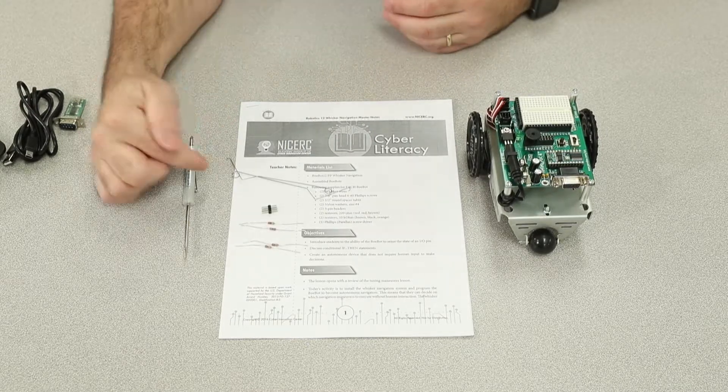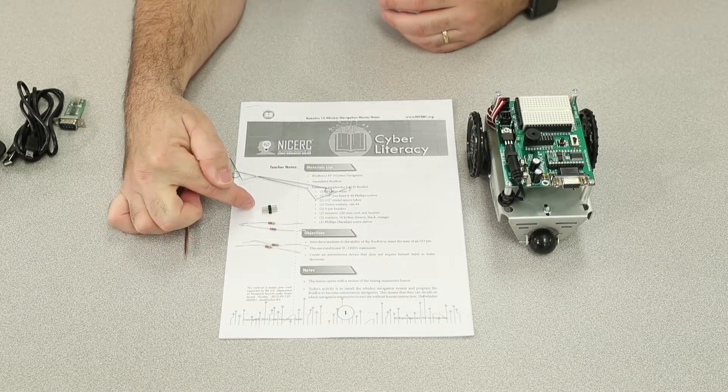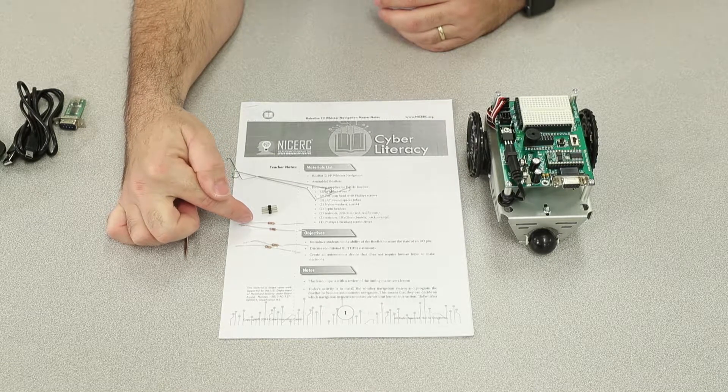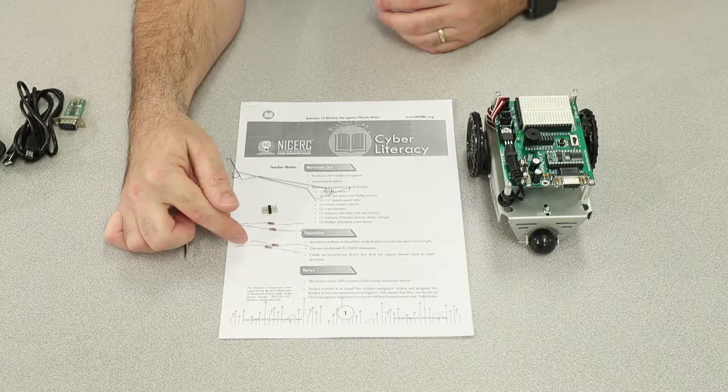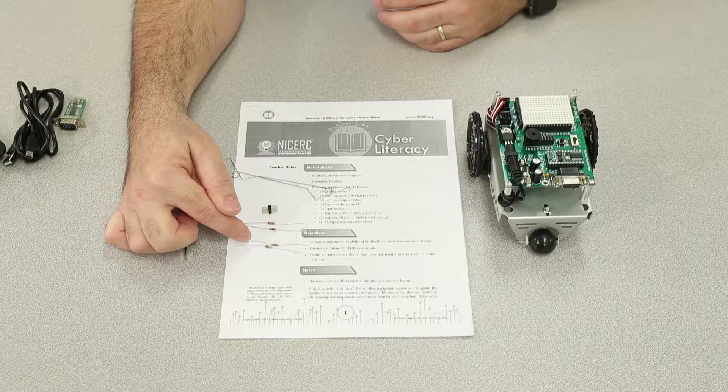So for the whisker build, you're going to need two whisker wires, two 3-pin headers, two 220 resistors, that's a red-red-brown stripe, and two 10K or 10,000 ohm resistors, that's brown-black-orange.